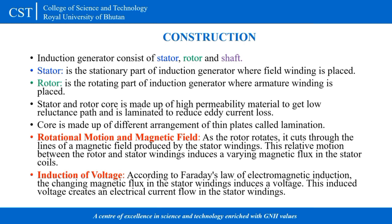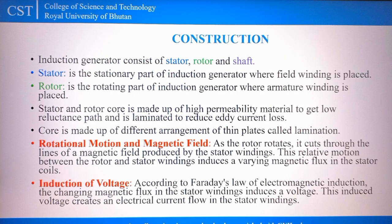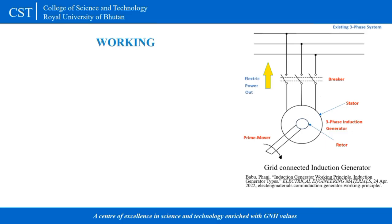As the rotor rotates, it cuts through the lines of magnetic field produced by the stator windings. This relative motion between the rotor and stator windings induces a varying magnetic flux in the stator coils. According to Faraday's law of electromagnetic induction, this changing magnetic flux induces a voltage, which creates an electrical current flow in the stator winding.